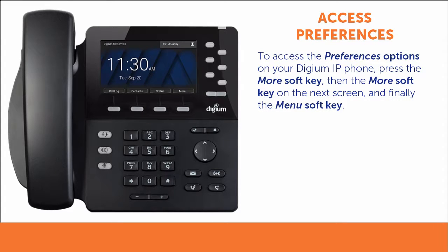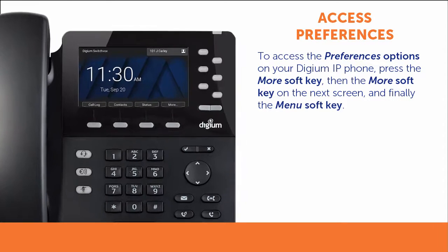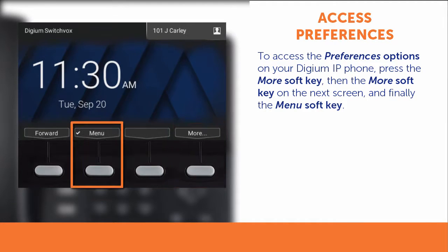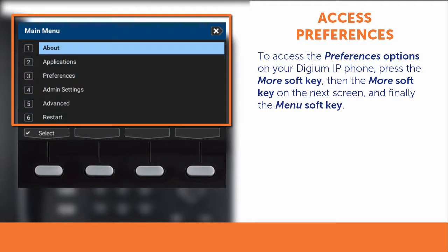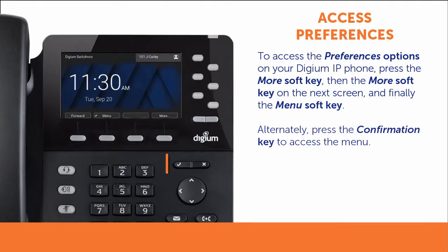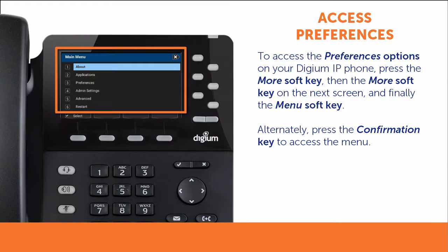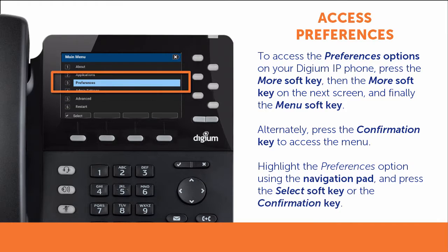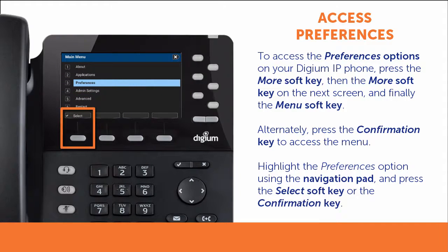To access your preferences, from an idle screen, select the More soft key, then the More soft key on the next screen, and finally the Menu soft key. You can also press the confirmation key once to get to the menu. Use the navigation pad to highlight Preferences and choose the Select soft key or press the confirmation key on the phone.